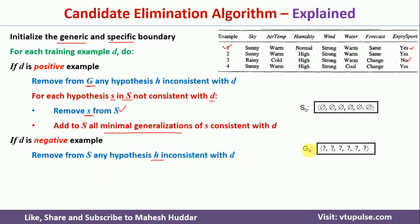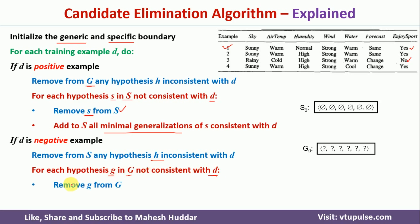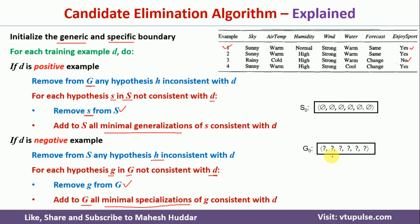After processing S, we go to the generic boundary G. We consider one hypothesis at a time from G and check whether it is consistent with the current example D. If it is consistent, we do nothing. If G is inconsistent with the current example, we remove that hypothesis and add all minimal specializations. Minimal specialization means a question mark is replaced with a specific value, and a specific value is replaced with null. To contrast: minimal generalization replaces null with a specific value like 'Sunny' or 'Rainy', and specific values are replaced with question mark; minimal specialization does the reverse.